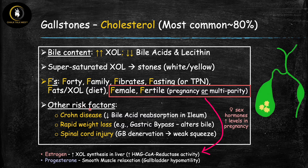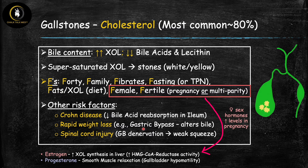There are also important risk factors that don't start with F. Number one is Crohn's disease, an inflammatory bowel disease causing damage to the terminal ileum, leading to less bile acid absorption and therefore cholesterol gallstone formation. Number two is rapid weight loss or gastric bypass surgery, which can alter bile content to favor stone formation. Number three is spinal cord injury, which causes denervation of the gallbladder, leading to the weak squeeze problem, bile stasis, and cholesterol gallstones.